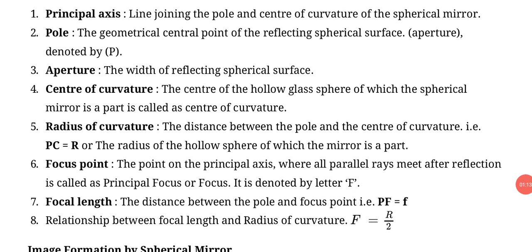First is principal axis. Line joining the pole and center of curvature of the spherical mirror is called principal axis. It means the line which joins pole P and center of curvature C, we call principal axis.